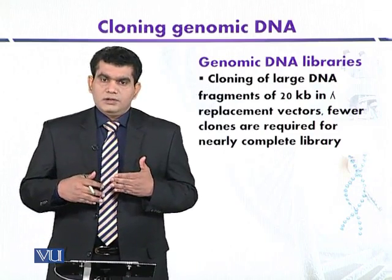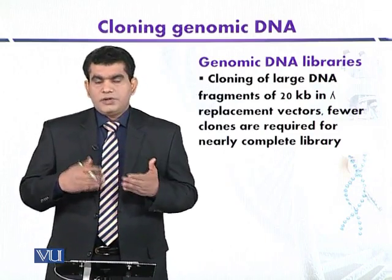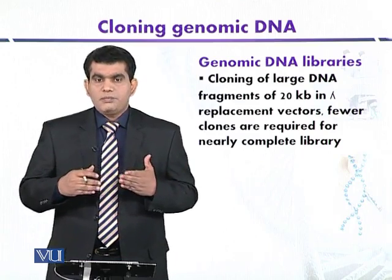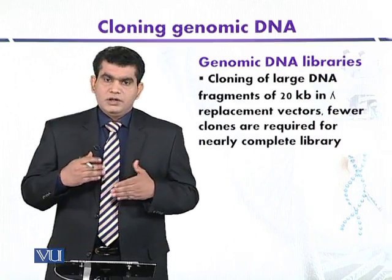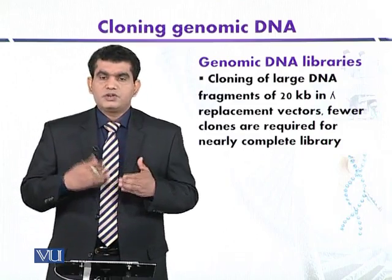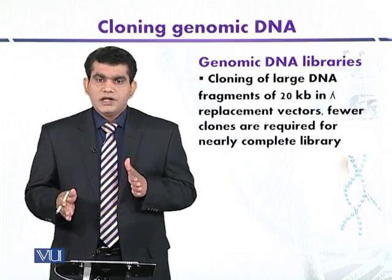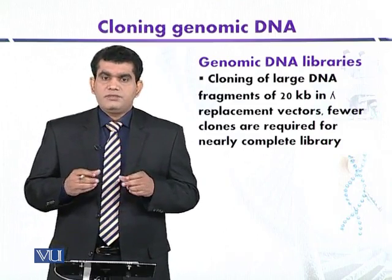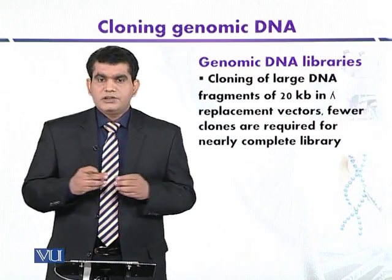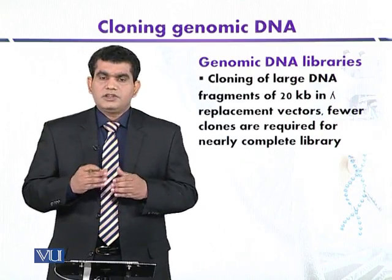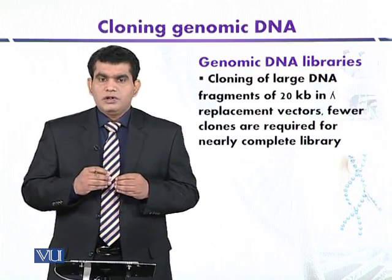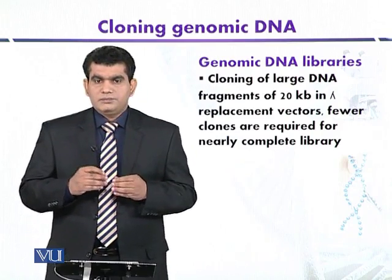Sometimes, even if the gene size is very small — like four kilobase pairs — attempting to clone it will result in a huge number of recombinant clones that are very difficult to screen. On the other hand, if the gene of interest is very large, it can be very difficult to clone into a suitable vector.